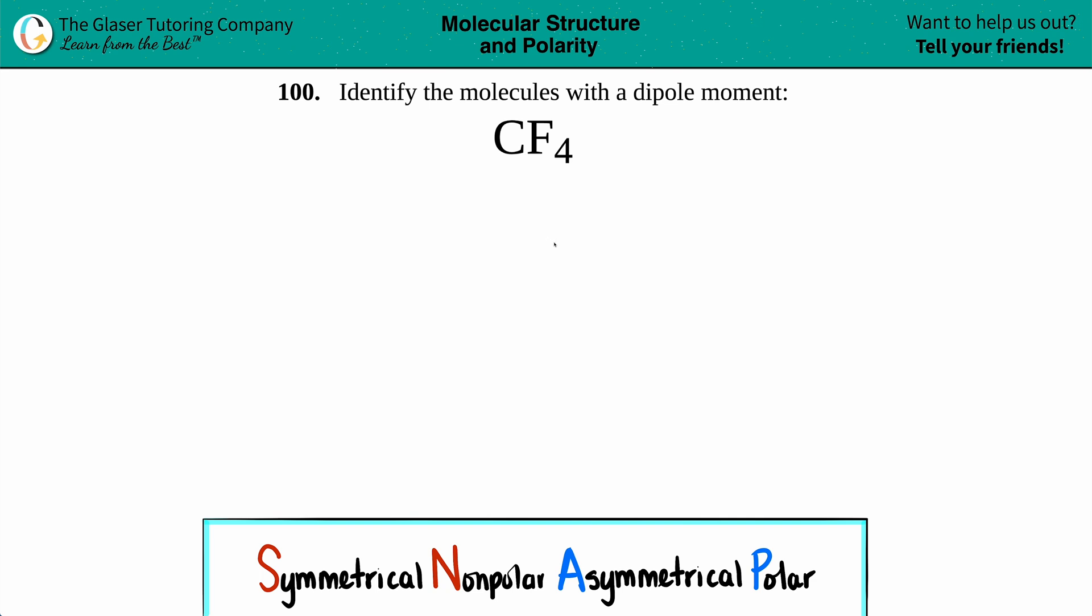Number 100: identify the molecules with a dipole moment. We have CF4, so does carbon tetrafluoride have a dipole moment? What is a dipole moment? A dipole moment means that anywhere inside this molecule there's an unequal sharing of electrons.